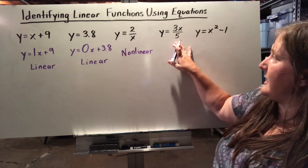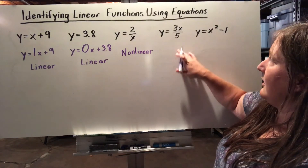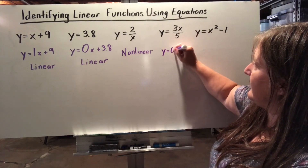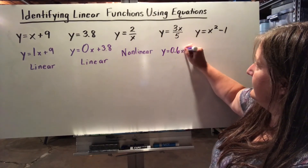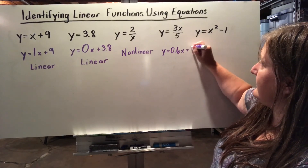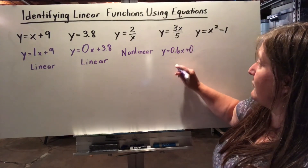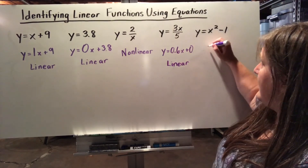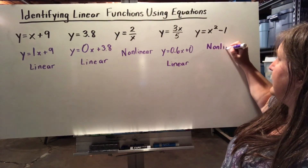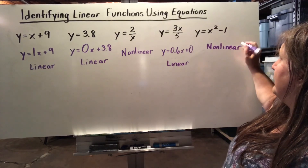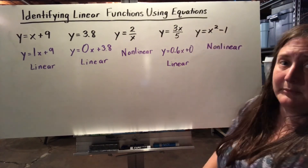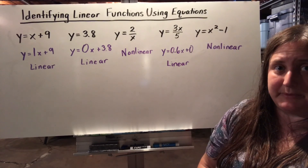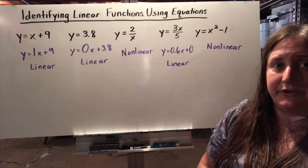Here I have 3 divided by 5x. The constant 3 over 5 can be reduced to 0.6, giving 0.6x, and then I can add 0. So I have the y equals mx plus b format — this represents a linear function. This last one is non-linear because I never have a squared variable in linear functions, so I can't put it in the form y equals mx plus b. It represents a non-linear function.